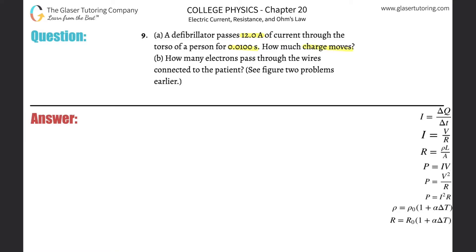Alright, so we know the current that is flowing, right? They tell us 12 amps. Remember, an amp is the same thing as coulombs per second, or the number of coulombs passing through a particular point per second.